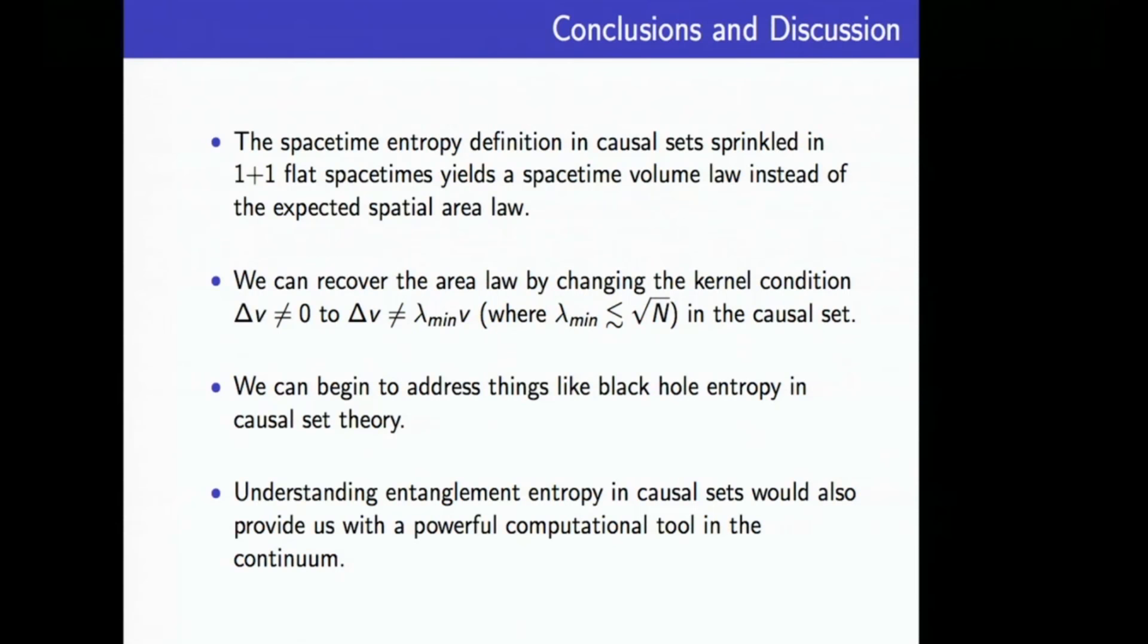I'll conclude by saying that we have the spacetime entropy definition which works in the continuum and causal set spacetimes, but for a long time we were puzzled by the result which we were getting by a naive direct application of this spacetime formula to the causal sets. We've realized that we can recover the area law in the causal set case if we change this kernel condition to have our smallest eigenvalue have a magnitude of square root n, where n is the number of elements in the smaller diamond. We understand this as corresponding to the cutoff and the need for an extra imposing of the cutoff. This is important for causal sets because we're beginning to understand entanglement entropy in causal sets.